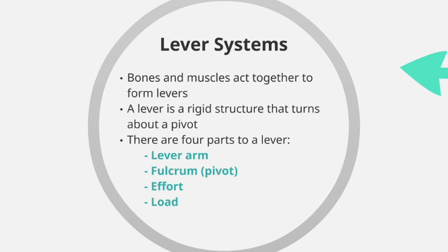There are four different parts to a lever. These are the lever arm, the fulcrum otherwise known as the pivot, the effort, and the load.